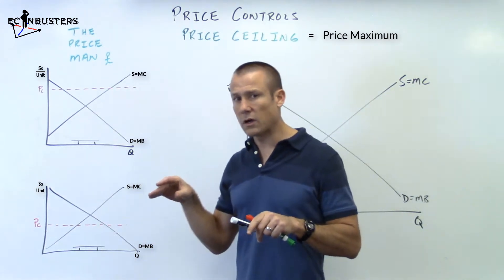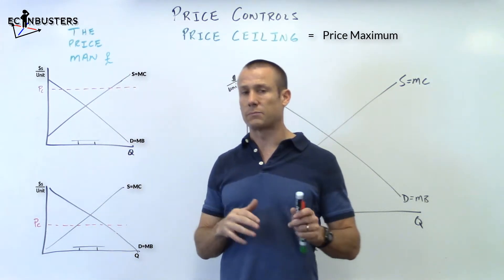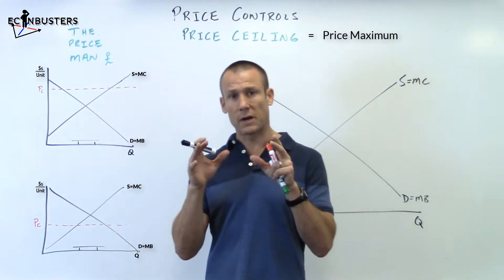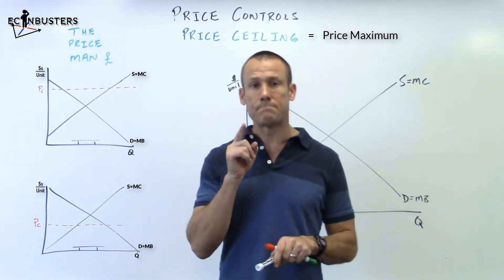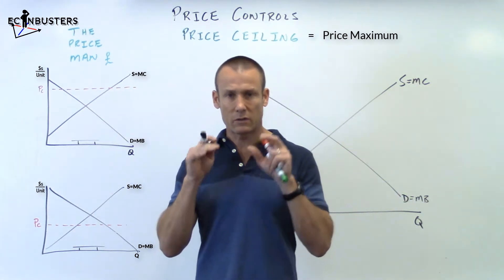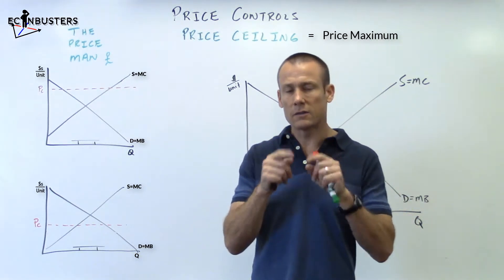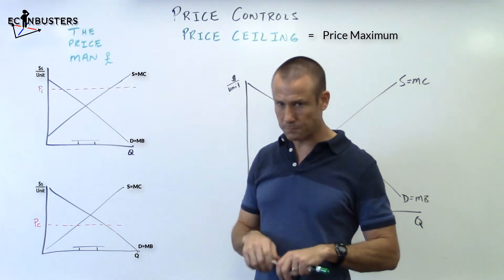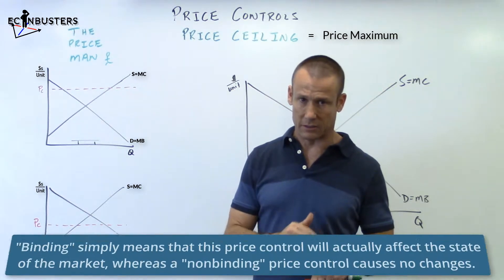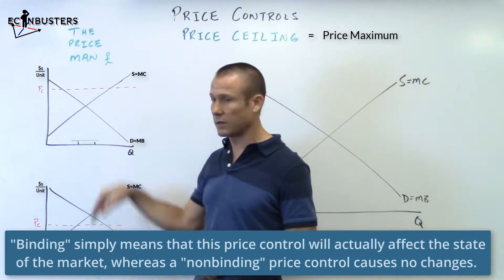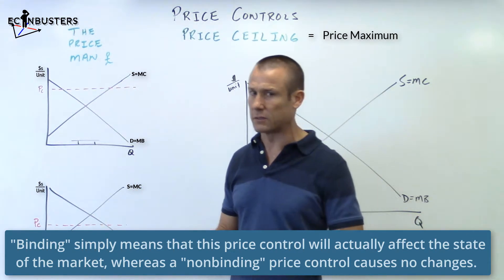We're going to be talking mostly about binding price ceilings, but I also want to talk about non-binding price ceilings. A non-binding price ceiling is when the price ceiling is set and it doesn't bind the market — it doesn't change the market at all. A binding price ceiling is a situation where when we set it, it binds the market and doesn't let the market get where it wants to get. Let's look at two graphs — one non-binding and one binding.